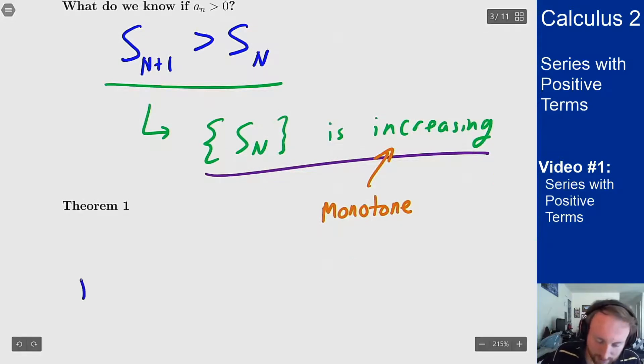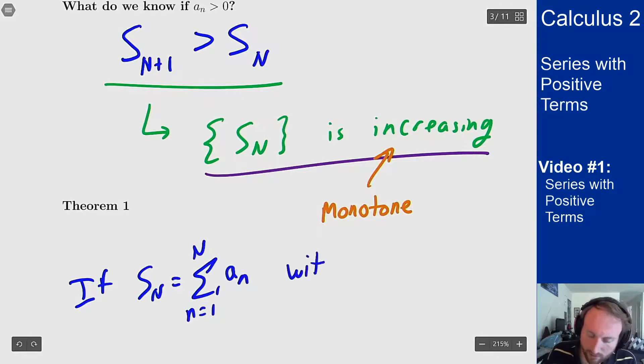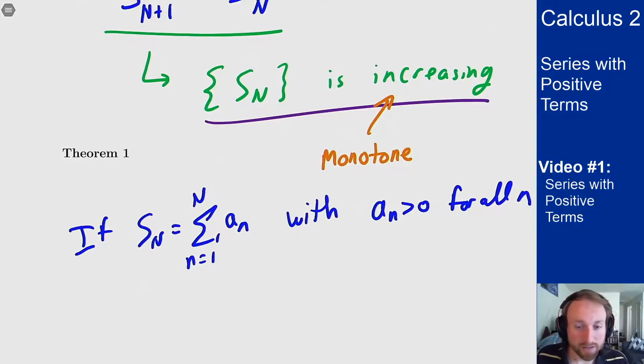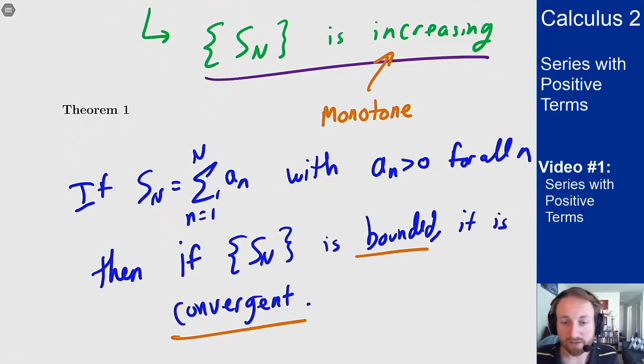The theorem says the following. So if I have S_n being the partial sums of this series with a_n always positive, then if I can show the sequence is bounded, it is therefore convergent. So all I have to do to show that a series like this converges is to show that it's bounded. And it turns out that is a much easier thing to do than trying to actually analyze convergence.